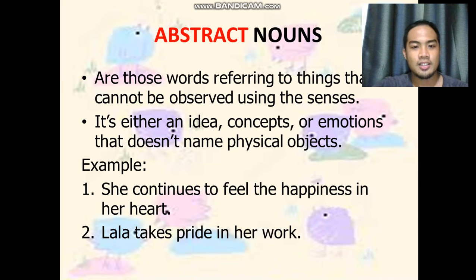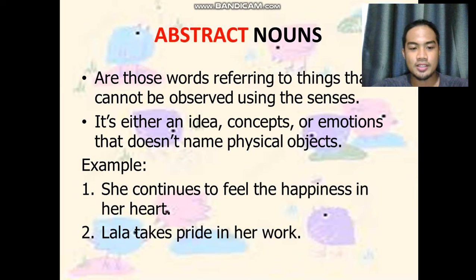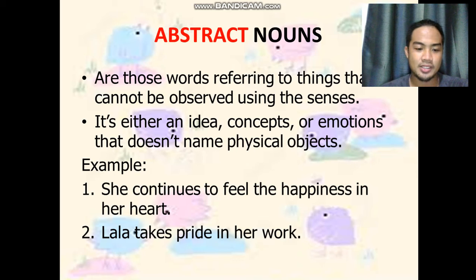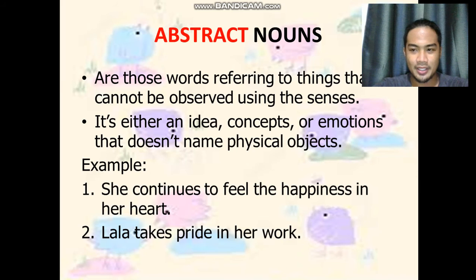How about the abstract nouns? Abstract nouns are those words referring to things that cannot be observed using the five senses — they cannot be touched, seen, or smelled. They are either an idea, concept, or emotion that does not name physical objects. For example: 'She continues to feel the happiness in her heart.' The abstract noun there is happiness. 'Lala takes pride in her work.' The abstract noun is pride.